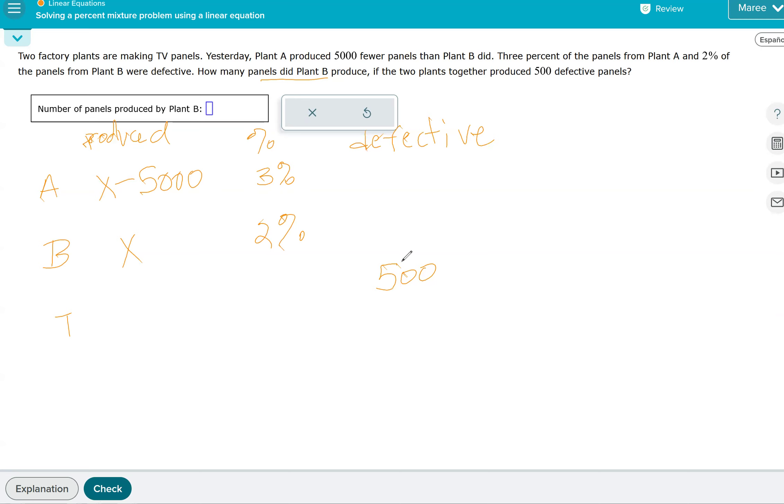So we can make how many defective panels were produced from plant A by doing 3% of X minus 5,000. And then the number of defective panels from plant B is 2% of how many were produced. So when we add those together, that should give us 500. So we have 0.03 times X minus 5,000 plus 0.02X, and that has to equal 500.